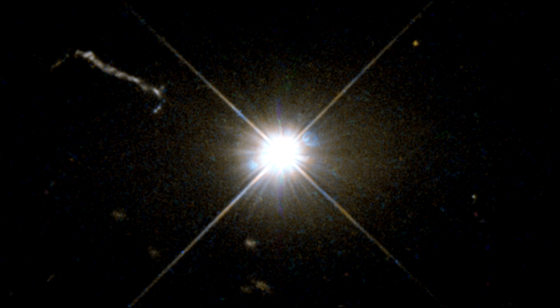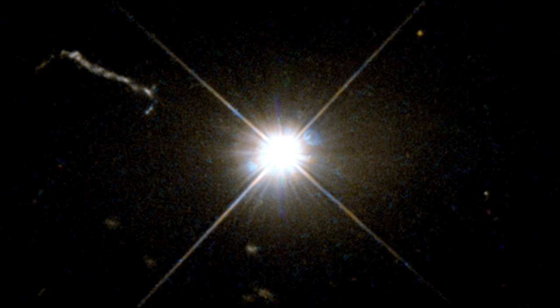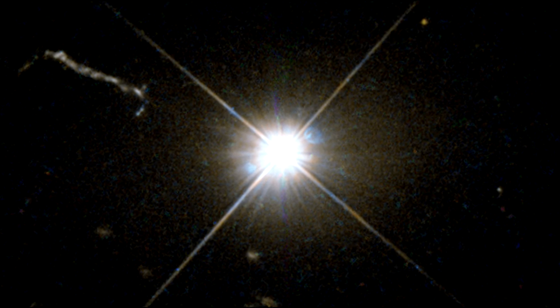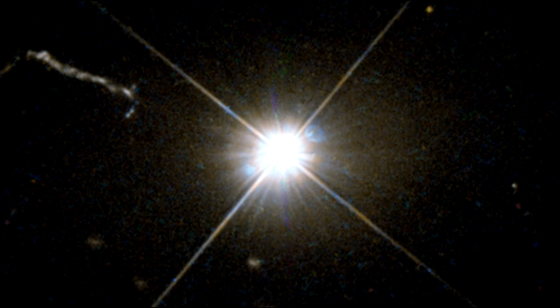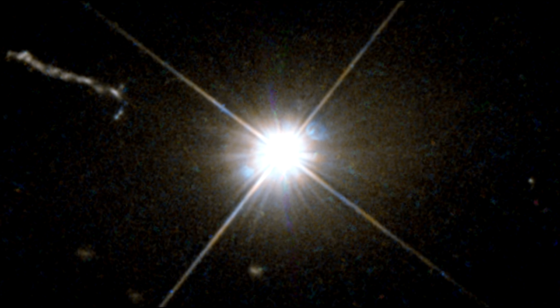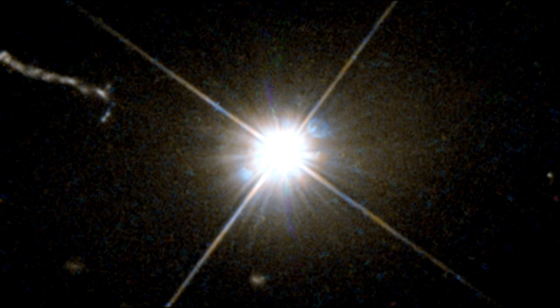Despite its great distance, 3C273 is still one of the closest quasars to our home. It was the first quasar ever to be identified and was discovered in the early 1960s.